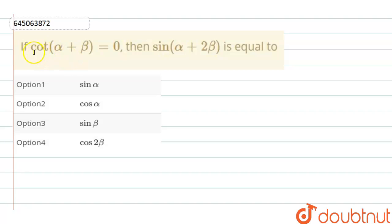Hello students. In this question we have given that cot(α + β) = 0 and we need to find the value of sin(α + 2β).